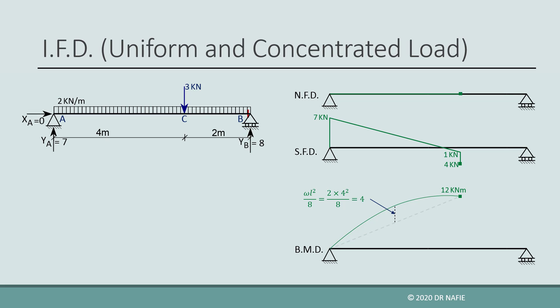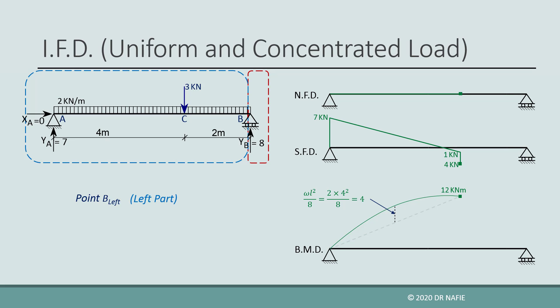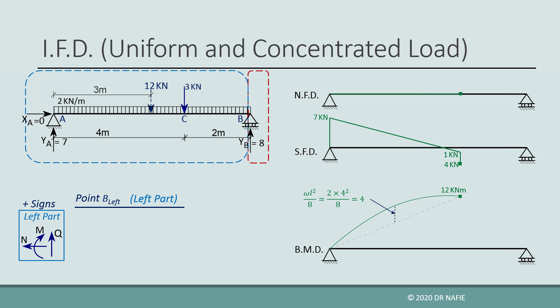In the next step, we move to the point on the left of the roller support at point B. Although it is much easier to work on the right part since it involves fewer forces, we will work on the left part for more practice. We convert the distributed load to an equivalent concentrated force. For this point, the whole length of the uniform load is in the left part, so the equivalent force will be 12 kilonewtons located 3 meters from point A. The normal force will be 0.